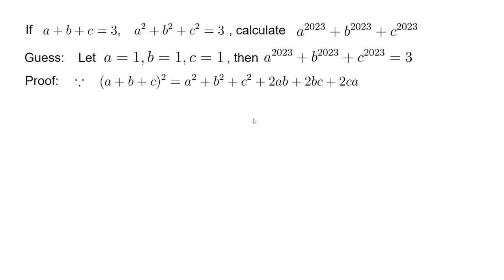When we calculate (a + b + c) squared, we plug in what we know: a plus b plus c and a squared plus b squared plus c squared. Then we can get ab plus bc plus ca equals 9 minus 3 divided by 2, which equals 3.